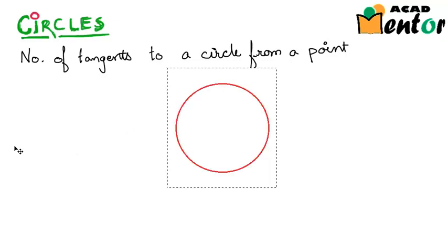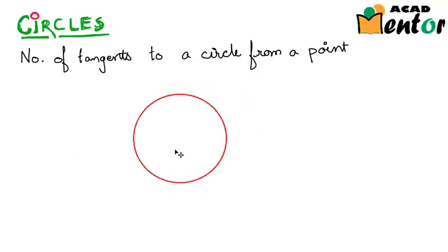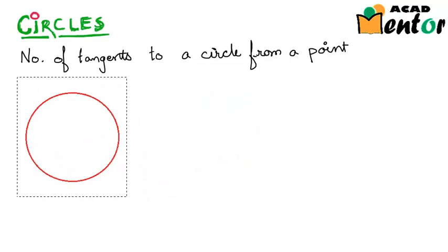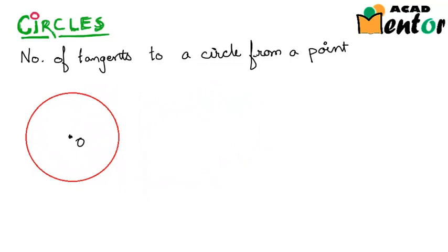Let's say we have our circle with the center at point O and we have to understand how many tangents are possible from a point outside, inside, or on the circle. Basically there can be three cases.